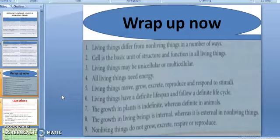Living things have a definite life span and they follow a definite life cycle also. The growth in plants is indefinite whereas definite in case of animals. The growth in non-living things is external. Non-living things do not grow, do not excrete and do not respire or reproduce but living things they grow, they excrete, respire and reproduce of its own kind.